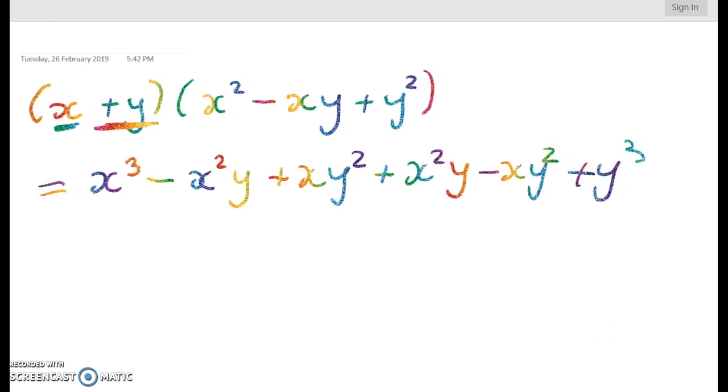Now let's have a look at what happens when I go to clean that up. I've got minus x squared y plus x squared y and I've got plus xy squared minus xy squared. So the whole thing simplifies to give me x cubed plus y cubed.